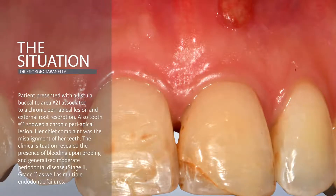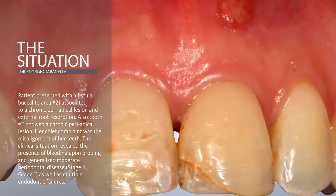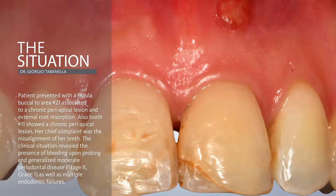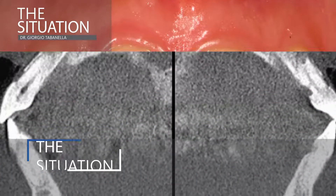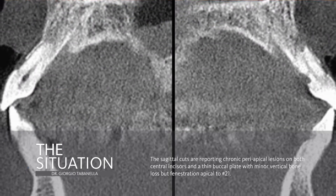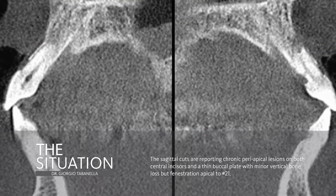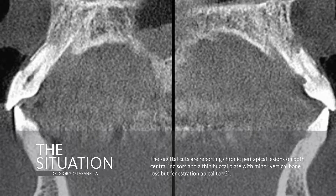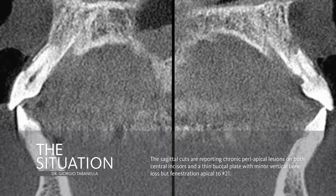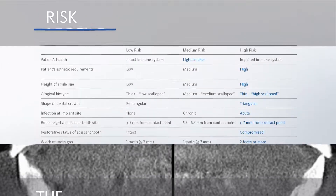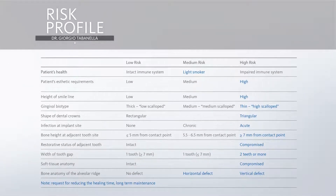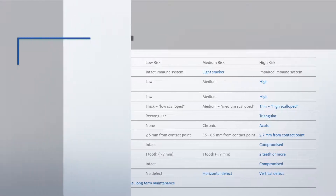This is a classic clinical situation where we're dealing with a chronic peri-implant lesion and external root resorption on both central incisors, associated with a fistula. The fistula is also creating a buccal fenestration, which is quite visible on the sagittal cuts on the right-hand side towards the palatal aspect. We're dealing with a patient with a high-risk profile — the patient is a smoker, with very high patient expectations, a high smile line, and a very thin phenotype.